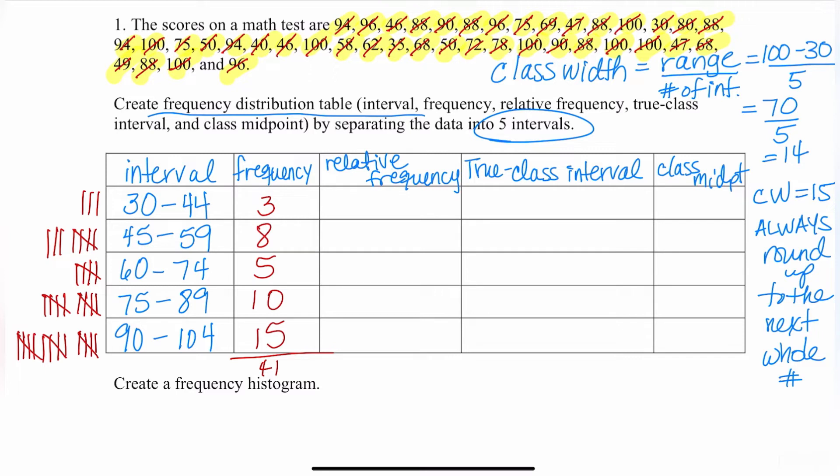We're going to find what's called the relative frequency. Every time you see relative, it's relative to the total. So I like to have these as a fraction and as a percent. Sometimes you'll see them just as decimals. I'm going to show you all three: fraction, decimal, and percent. Let's start with the first one. We're going to write 3 over 41, 8 over 41, 5 over 41, 10 over 41, 15 over 41. Basically, you take each one and just put it over the total.